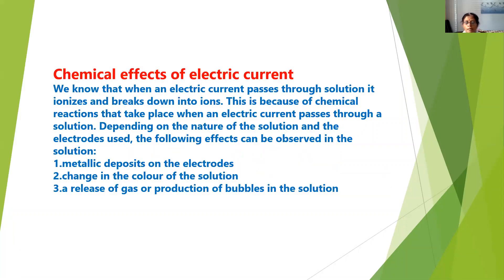In the last session, we revised chemical effects of electric current. We know that when an electric current passes through a solution, it ionizes — that is, it breaks down into ions. This is due to the chemical reaction that takes place when an electric current passes through a solution. Depending upon the nature of the solution and the electrodes used, effects can be observed such as metallic deposits on electrodes, change in color of the solution, or release of gas or production of bubbles.